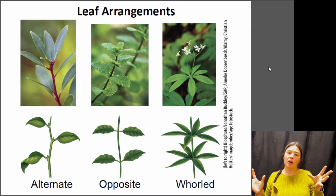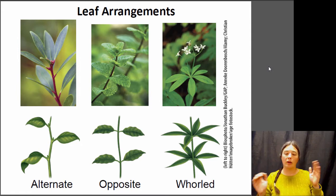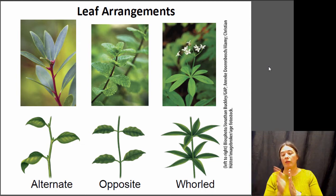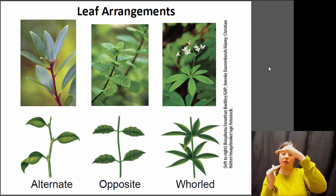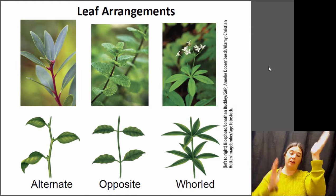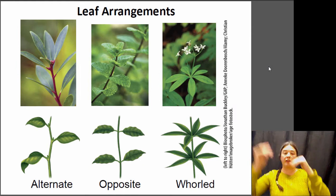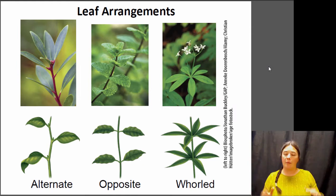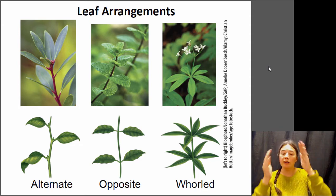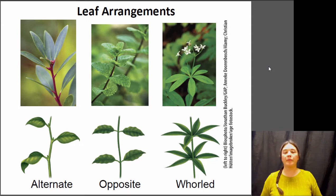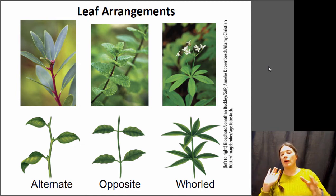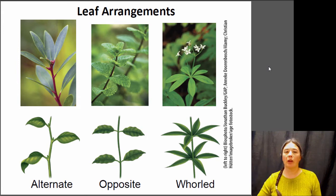In terms of the structure of axillary buds, there are a couple of different arrangements. Sometimes you have an alternate structure where an axillary bud alternates from one side to the other between internodes. You can have opposite, where at each node you have axillary buds on both sides opposite each other. Or you can have a whorl structure where at each node you have a number of different leaves coming off the central stem.